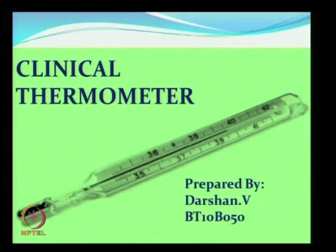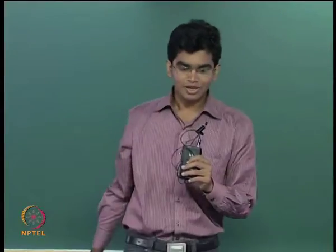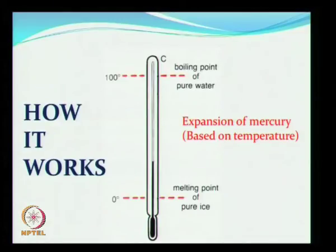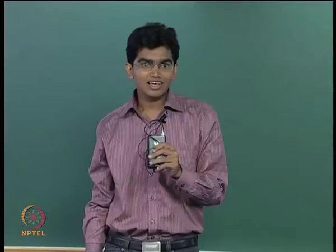Respected sir, dear friends, good evening. I am Darshanvi. Roll number BT10B050. It is my pleasure to speak to you today on clinical thermometers. A clinical thermometer is used to measure body temperature. It consists of a mercury bulb and a stem which contains the capillary tube. There is a constriction above the mercury bulb. It works on the principle of expansion of fluids. The mercury rises and falls in the capillary tube based on changes in temperature. The constriction makes sure that the mercury does not fall suddenly, thereby enabling us to take the reading correctly.